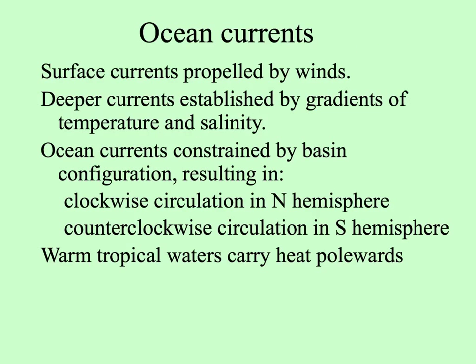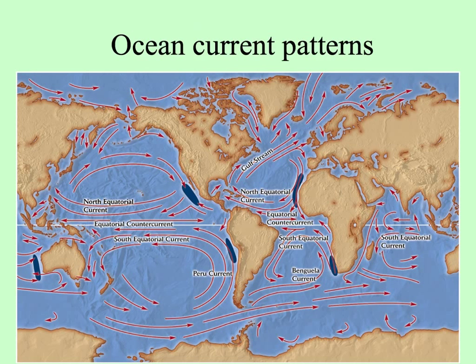Ocean currents are also affected by the surface of the Earth under the ocean — not only the winds, but the basins that constrain flow. Temperature and salinity also influence deeper currents. Basically, currents circulate clockwise in the northern hemisphere and counterclockwise in the southern hemisphere, as warm tropical waters in both hemispheres carry heat toward the poles. This map shows clockwise circulation north of the equator and counterclockwise circulation south of the equator.